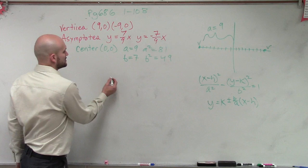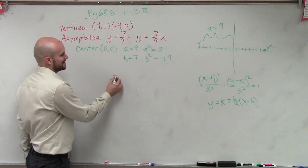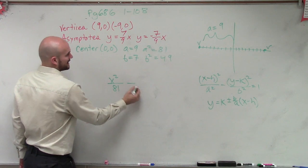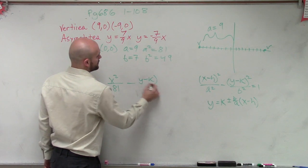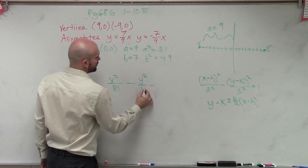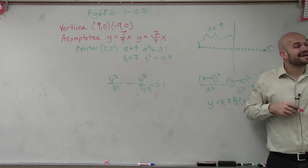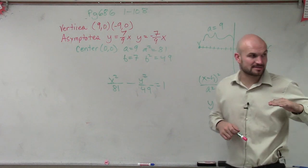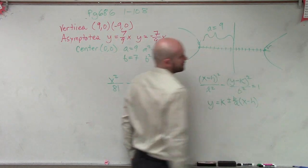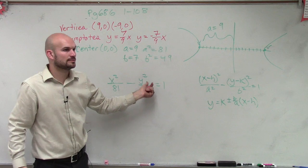We can — absolutely. So I can write x squared over a squared, which is 81, minus y squared over 49 equals 1. The x is over a squared when it's a horizontal axis. This graph is going to open left and right. But if the graph was opening up and down, then x and y terms would be swapped.